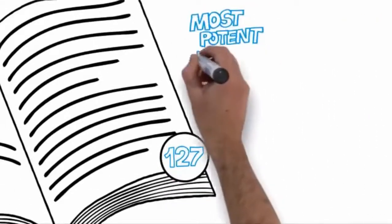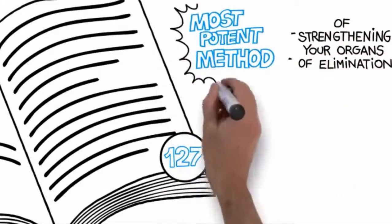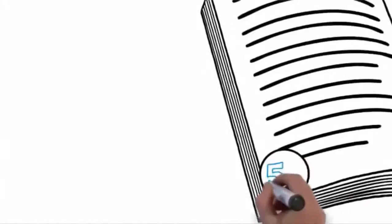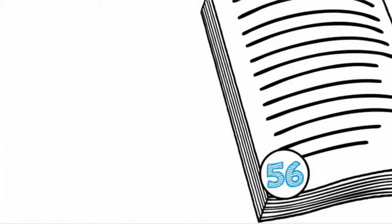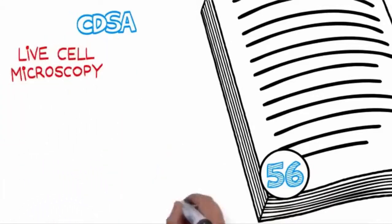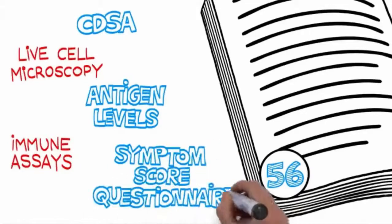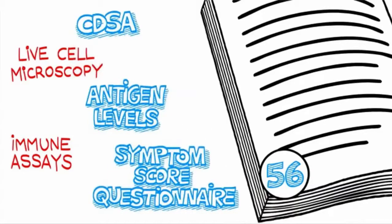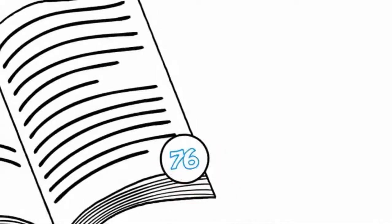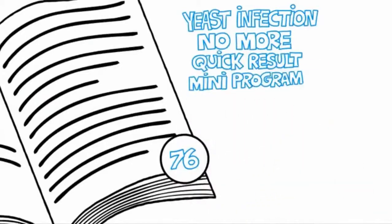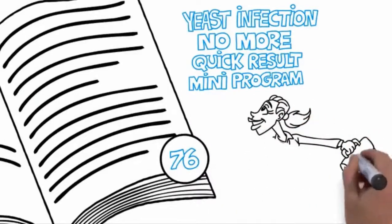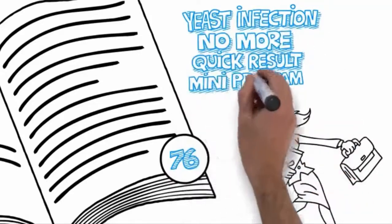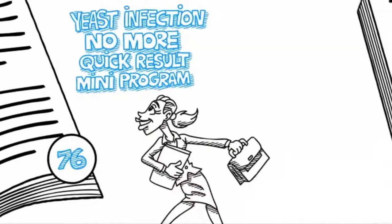On page 127, I'll introduce you to the most potent method of strengthening your organs of elimination. This important step alone has done wonders for thousands of candida overgrowth sufferers faster than they ever thought possible. On page 56, you'll discover how candida infection can be diagnosed using CDSA, live cell microscopy, antigen levels, immune assays, and the symptom score questionnaire. You'll also learn about a simple test that you can do at home to know the exact severity of your candida infection. You'll know the answer in less than 15 minutes. On page 76, you'll find the yeast infection no more quick results mini program. If you are busy and cannot follow all of the protocols mentioned in the full program, then this step-by-step mini program is for you. It is relatively short, extremely practical, and if followed correctly, can yield significant results in days.